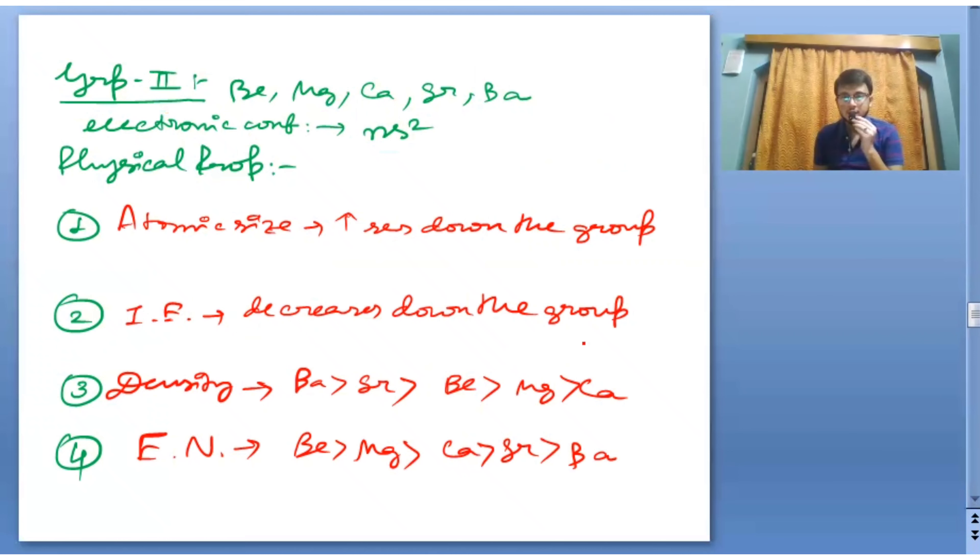Ionization enthalpy decreases down the group. Densities: Ba better than Be better than Mg than Ca, so it is exceptional. Electronegativity: Be better than Mg better than Ca. Here is no exception, they decrease down the group.